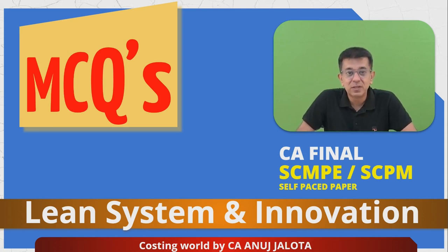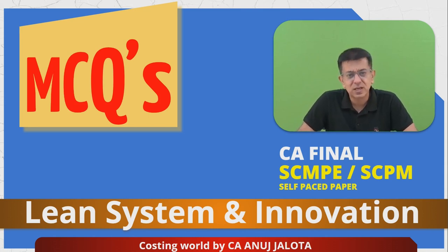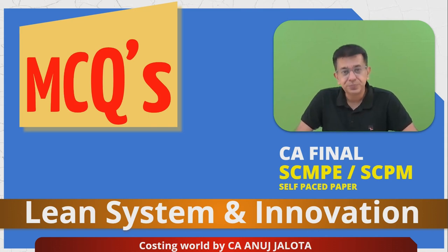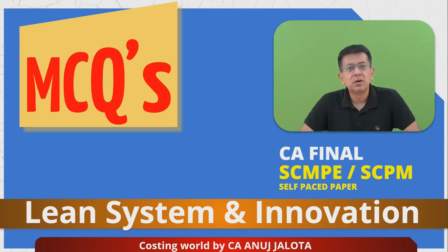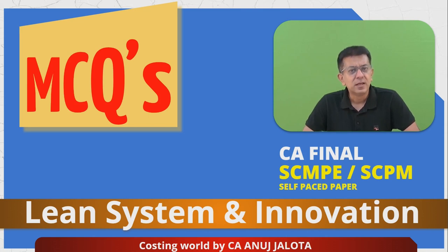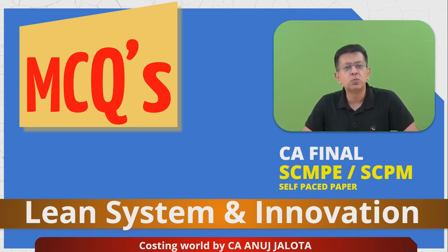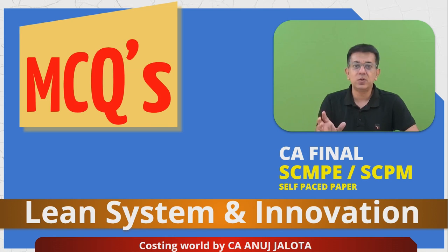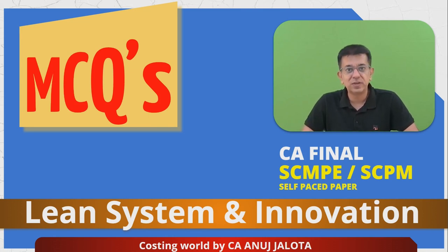This chapter is called Lean System and Innovation. Lean system is basically about cleaning up your systems — trying to avoid waste — and there are a lot of techniques available. One of those techniques is called Six Sigma. Six Sigma is essentially a mathematical term whereby we try to say that defects should be almost zero — specifically 3.4 per million. If you reach that level, you have reached Six Sigma.